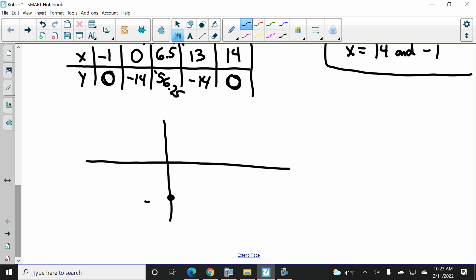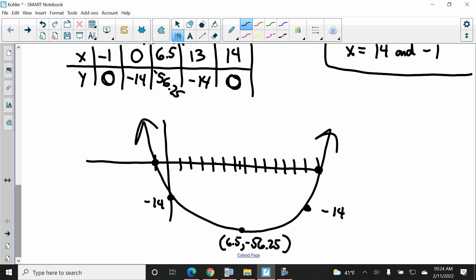Zero, negative 14. There we go. Negative 14. Negative 1, zero. That looks reasonable enough. 14, zero. 13, negative 14. There we go. That's negative 14. And six and a half. And negative 56.25. And there it is. That is all six points. Or six parts for 12 points. We are chested out.